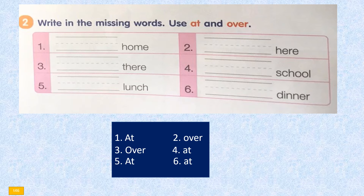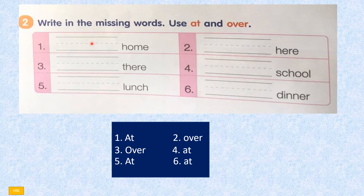Now we are going to have this. Number two — this is the continuation of our textbook page 46. Write in the missing words; use "at" and "over". Number one: at home. Write "at home". Number two: over here.